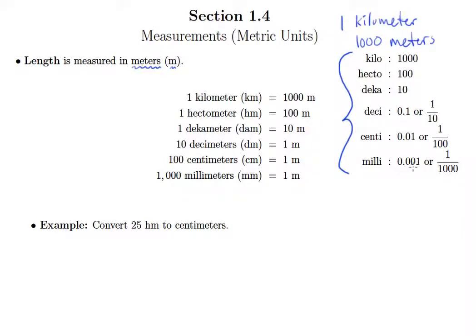A centimeter is 1/100 of a meter. In this example we're going to convert 25 hectometers into centimeters. There are a couple strategies that we can use for doing conversions in the metric system, but for now we're just going to stay with our familiar strategy of using unit conversion factors.